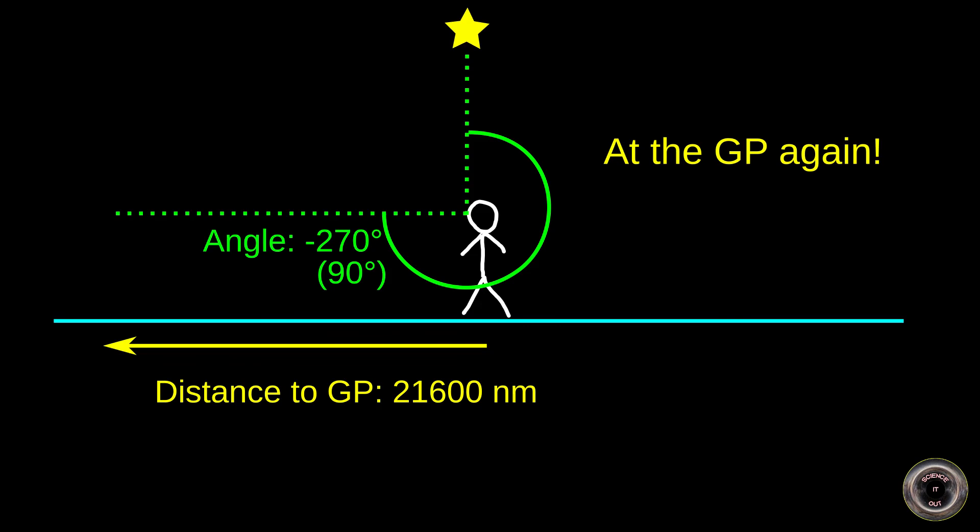And note that we said nothing about the direction in which we moved. This would work just as well in any direction. So if we start at a star's GP and move 21,600 nautical miles in any direction, the star will be back in the zenith, which means we'll be back at the GP. Weird stuff. Sounds impossible. Unless… Unless the Earth is a globe with a circumference of 21,600 nautical miles. Thanks for watching.